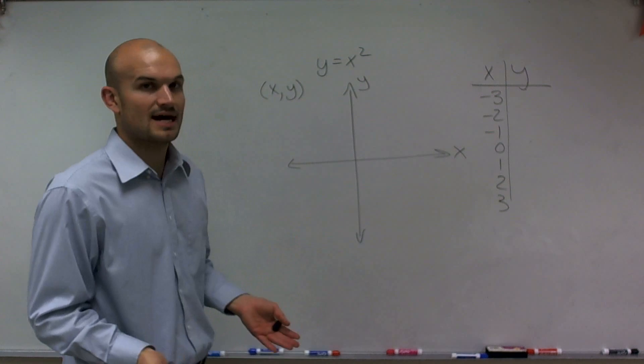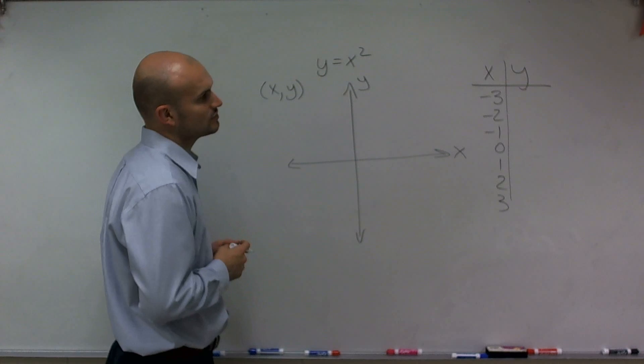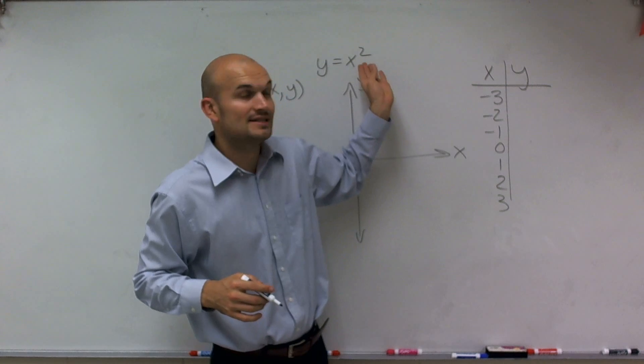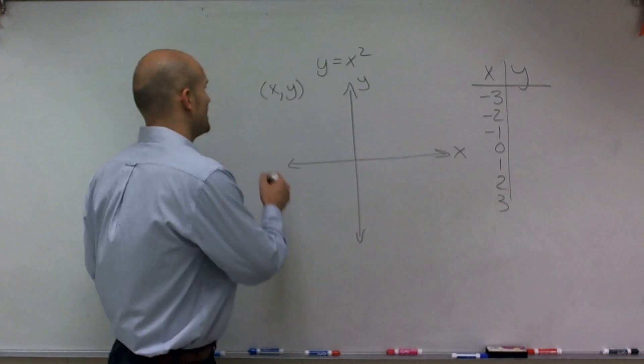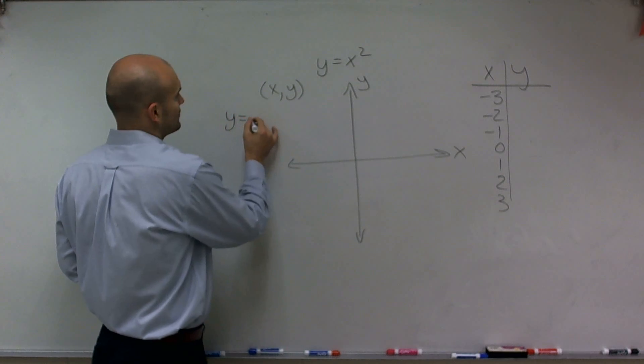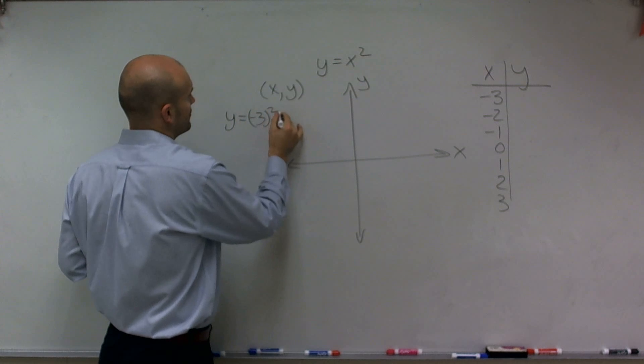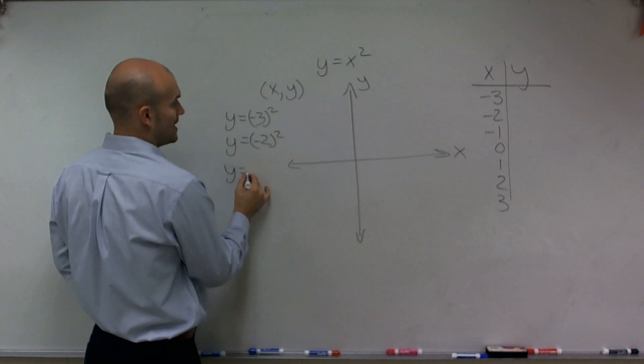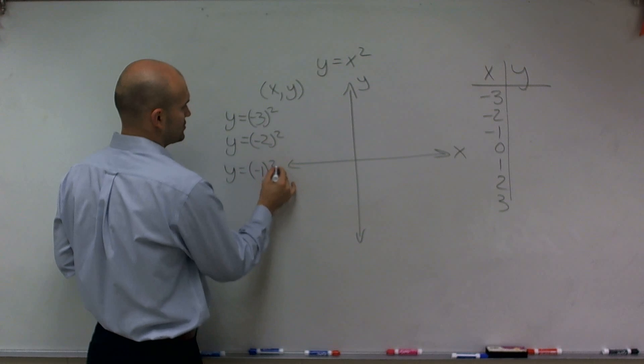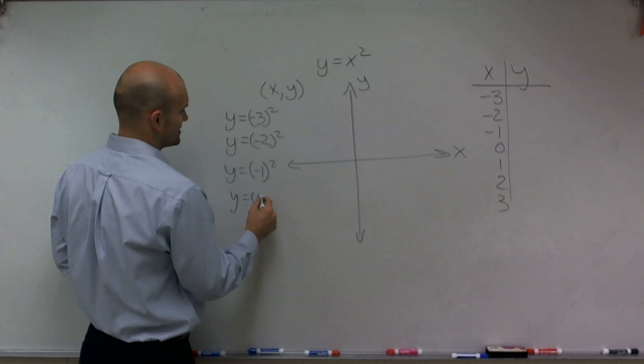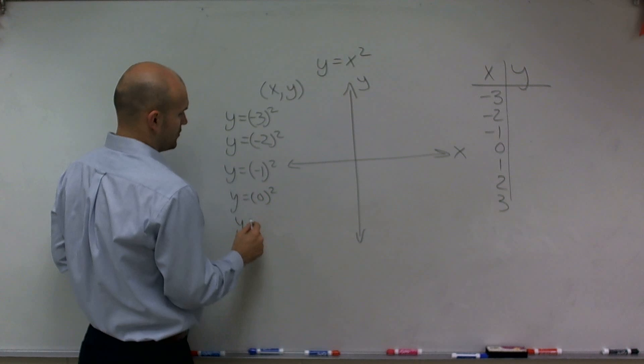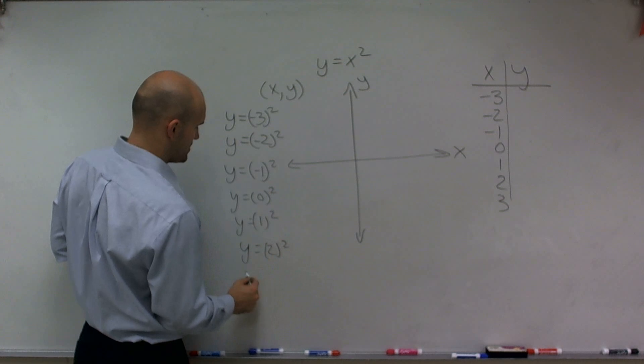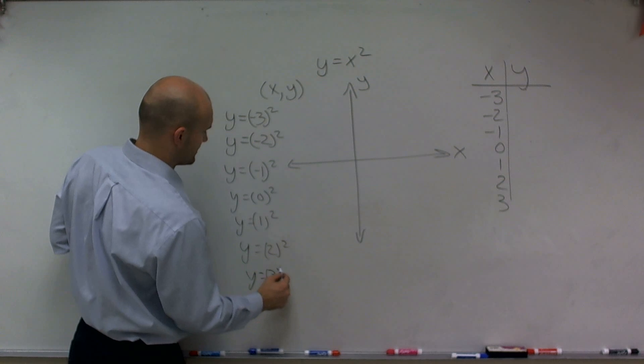So to figure this out, what we're going to do to find the y-coordinate for each one of these, you're just going to plug in your x value into the equation for x and then find y. So we have y equals negative 3 squared, y equals negative 2 squared, y equals negative 1 squared, y equals 0 squared, y equals 1 squared, y equals 2 squared, and y equals 3 squared.